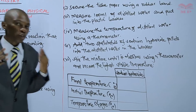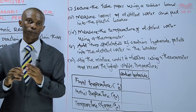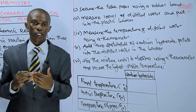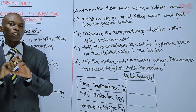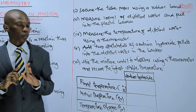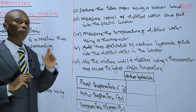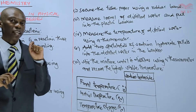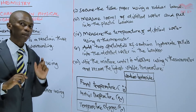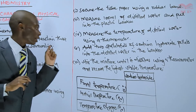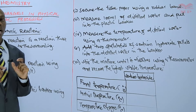When you put sodium hydroxide pellets in distilled water, sodium hydroxide solid dissolves in water, leading to production of heat to the surrounding. Therefore, what is expected is that the final temperature will be higher than the initial temperature. The final temperature is the temperature of the mixture of sodium hydroxide and distilled water, and the initial temperature is the temperature of distilled water alone.